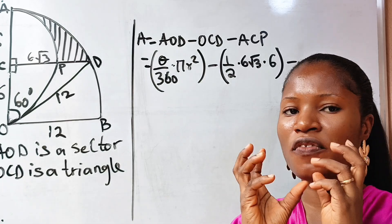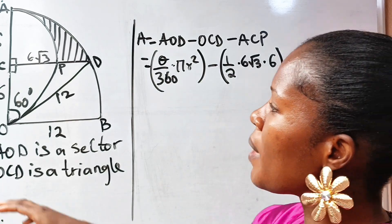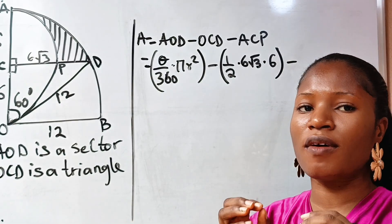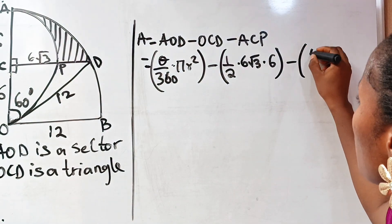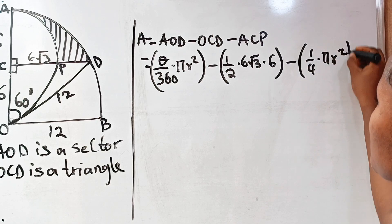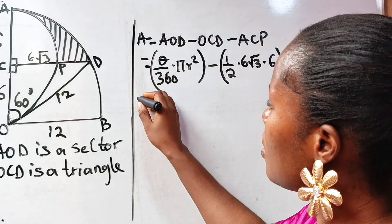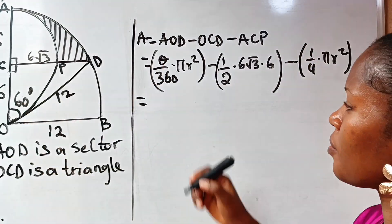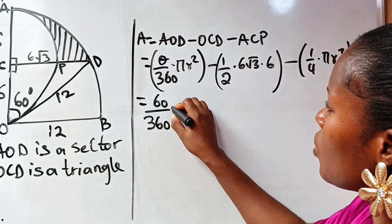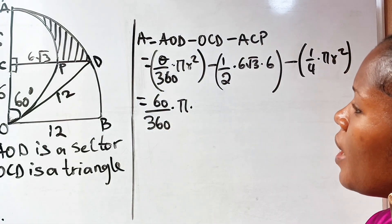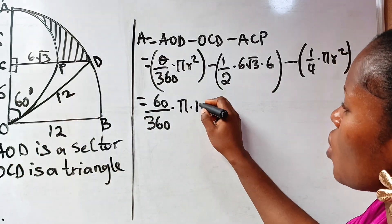ACP is a quadrant of a circle, so its area is one quarter times π r². Now substituting in the values: for the sector, theta is 60 over 360 times π times 12 squared.